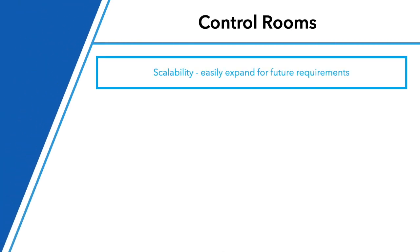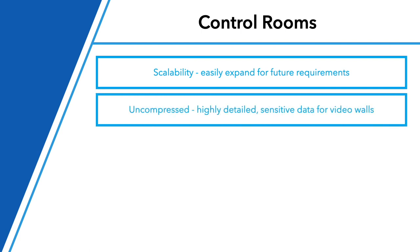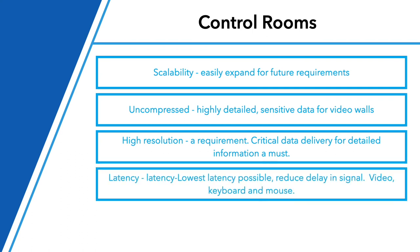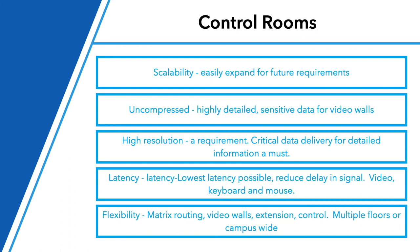Control rooms want to scale easily and add quickly — you put down a transmitter or receiver, plug it into the network, and you're rolling. Uncompressed video is critical: highly detailed, sensitive data in control rooms needs to be seen uncompressed on video walls. High resolution — 4K 60 4:4:4 per channel on our transmitters and receivers. Lowest latency possible reduces delay in the video signal, which is extremely valuable for video conferencing and keyboard-and-mouse control. The system is flexible — extending, matrix routing, video walls, multi-floor or campus-wide — extremely flexible and great for designing.